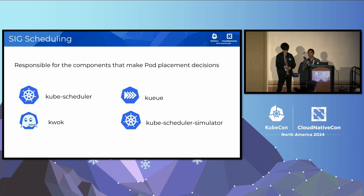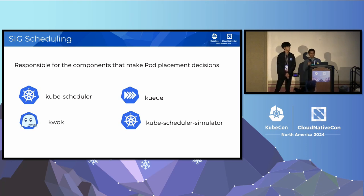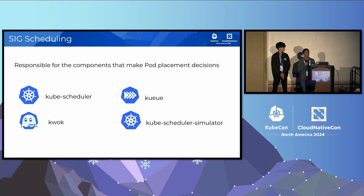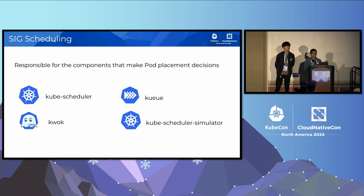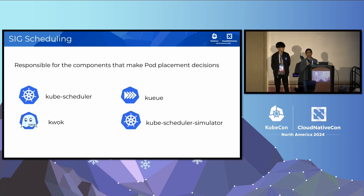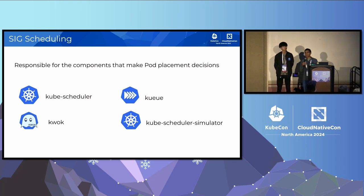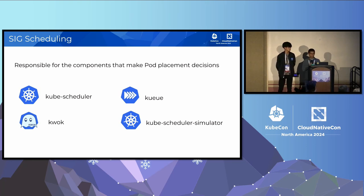For those of you who don't know, SIG Scheduling is the special interest group responsible for the components that make pod placement decisions. Our main mandate is to maintain the Kube Scheduler, but the SIG as a whole has a number of sub-projects. Today we're going to talk about Kube Scheduler, Kueue, and the Kube Scheduler Simulator.